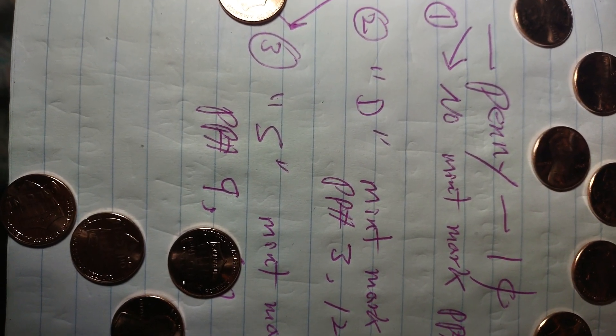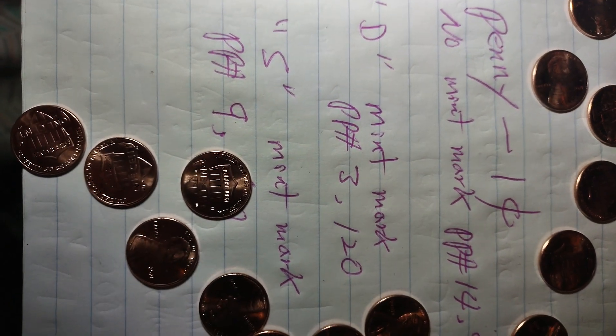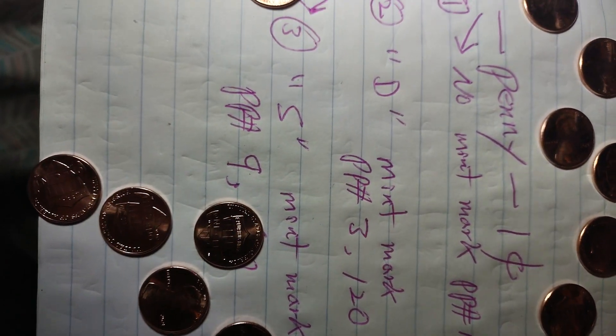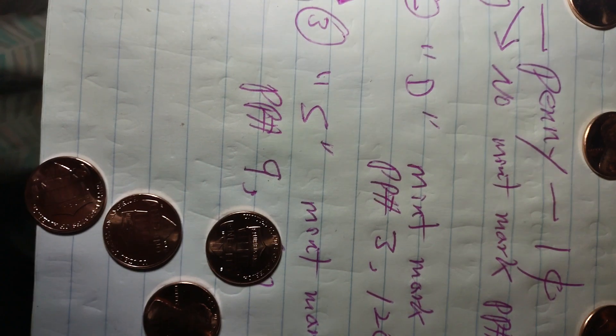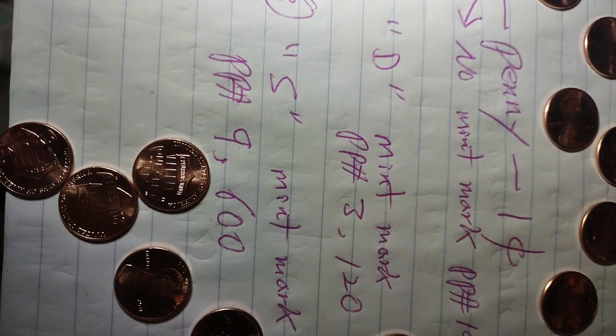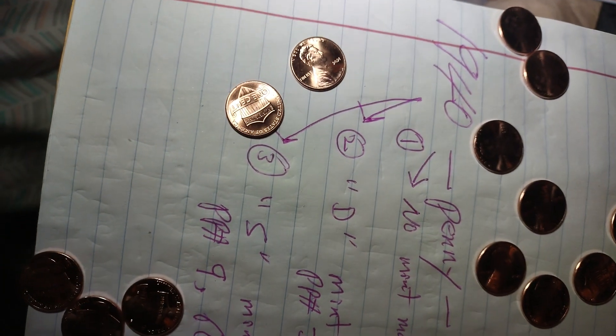D is for Denver, and the one with no mint mark is selling for $9,000 to $9,600. So get rich with the penny folks.